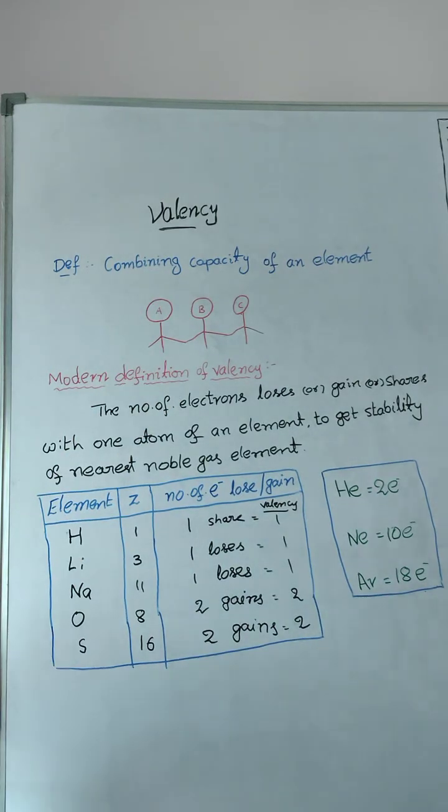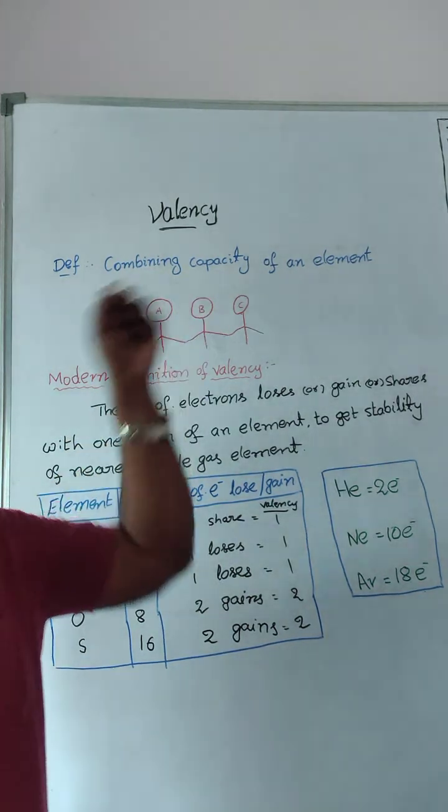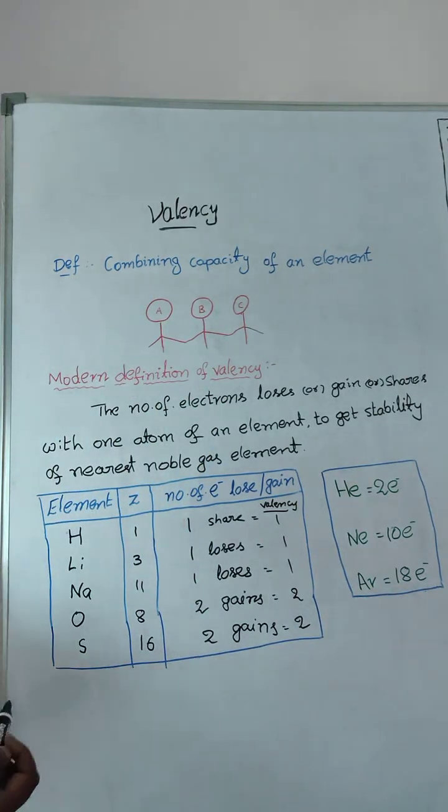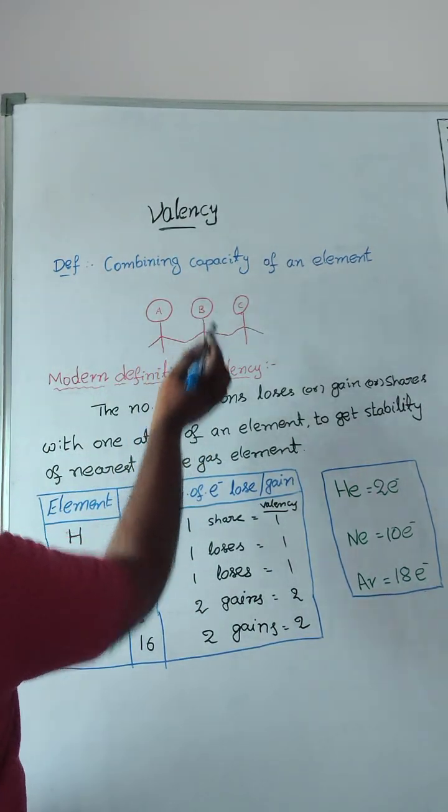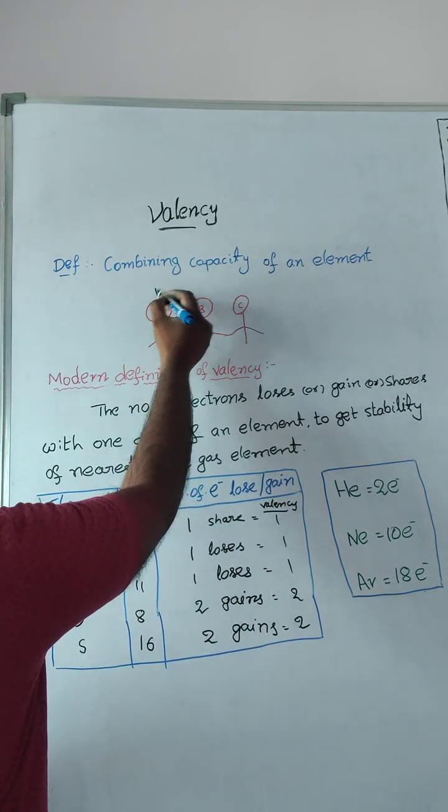So here if you observe three diagrams, three persons A person, B person, C person, they stood side by side by holding hands. So first person holding how many members? One member. So his combining capacity is one.